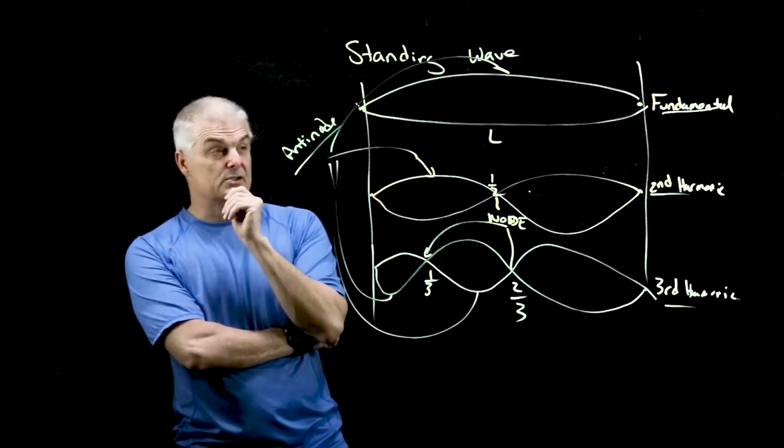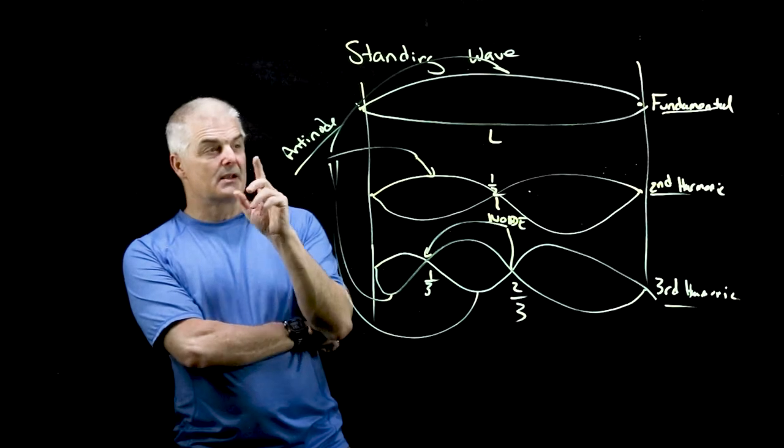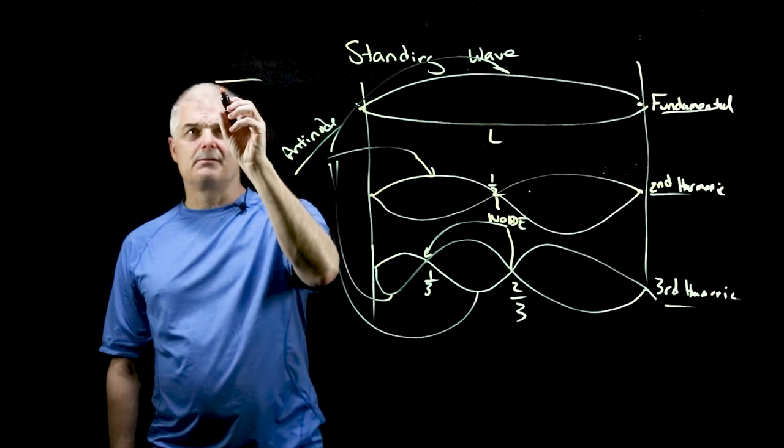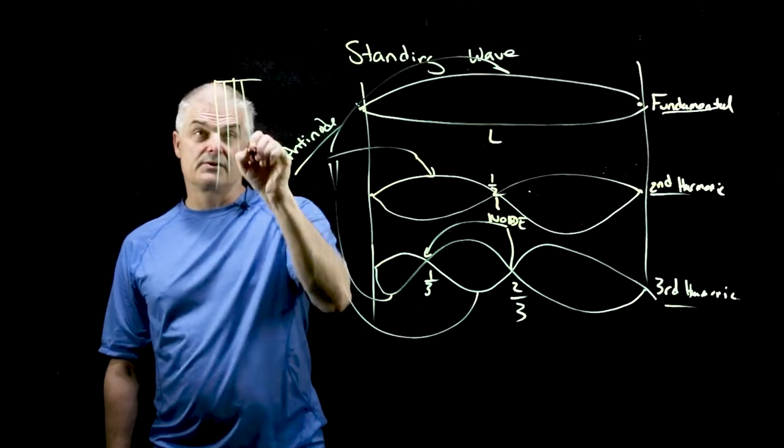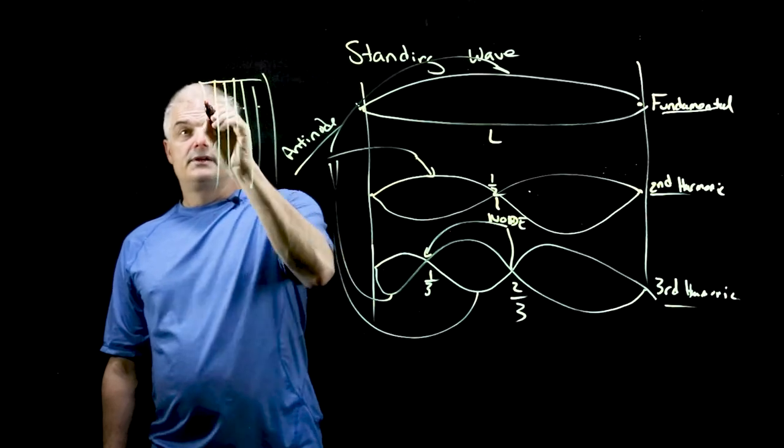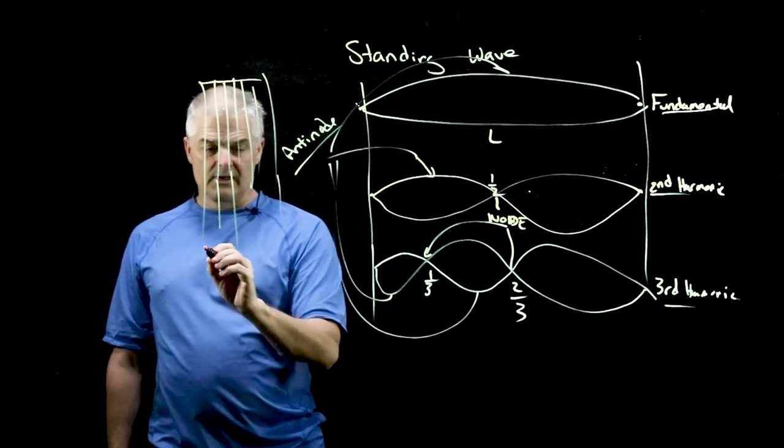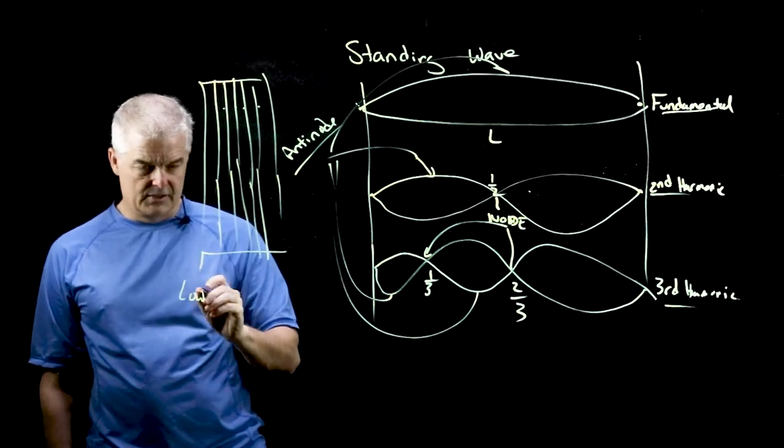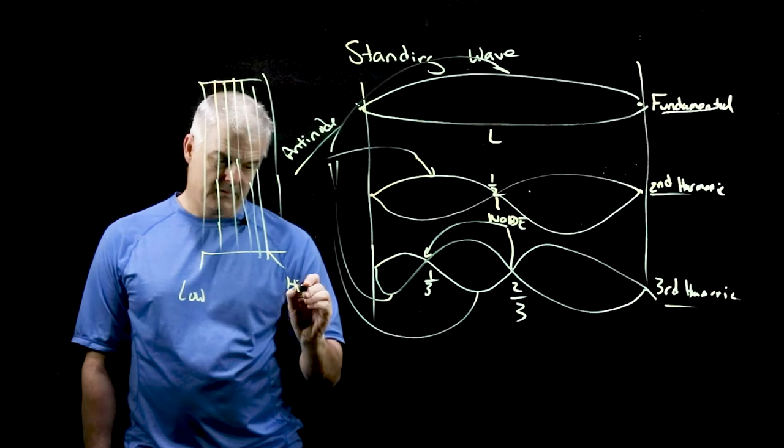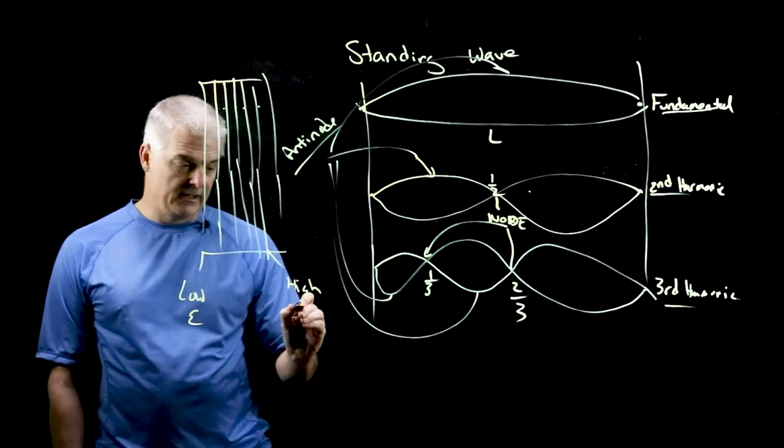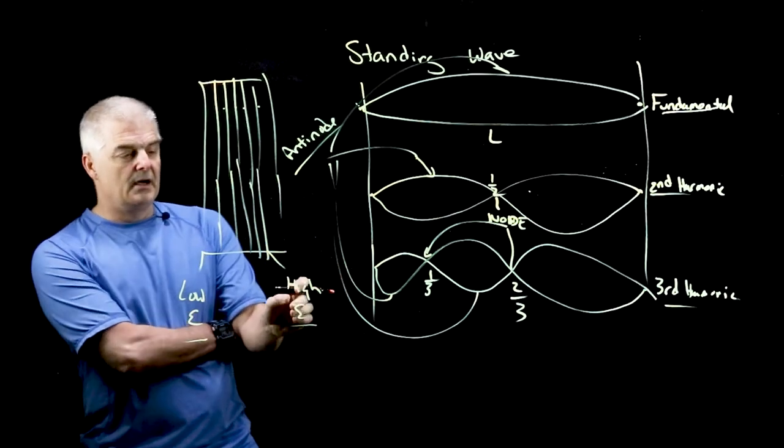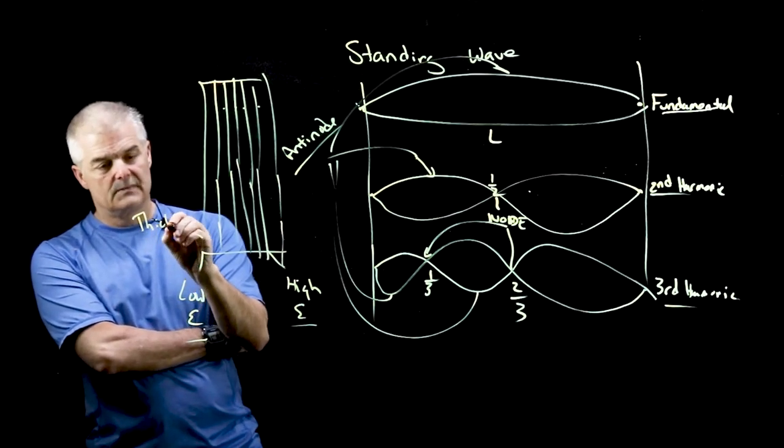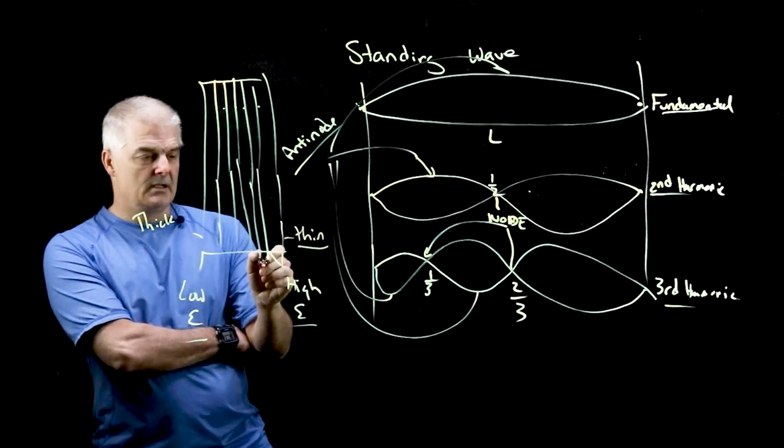One last thing I think is interesting when talking about stringed instruments is, in a guitar, all the strings are the same length. There's six strings. So the lengths of the string are exactly the same, but if I pluck this string, this is low frequency and low sound, and this is a high sound. Turns out this is an E, and this is an E, but this is an octave higher. And what's different is this is a thicker string, and this is a thinner string.